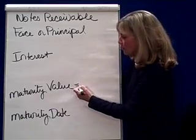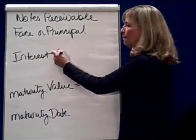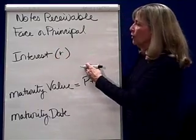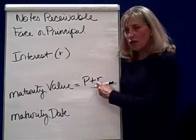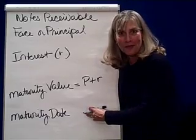The maturity value is always the principal plus the interest. I like to use R for interest, like economists do. Principal is the face amount, or what you borrowed. So maturity value equals principal plus interest. You also have to figure out when it's due.